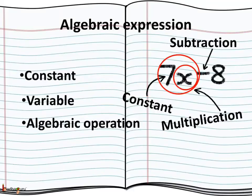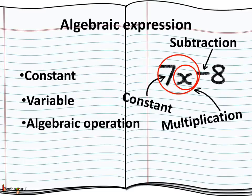We already know what an algebraic expression is. An algebraic expression is made of constants, variables, and arithmetic operations like addition, subtraction, multiplication, division, etc. For example, 7x minus 8 is an algebraic expression because 7 and 8 are constants with fixed values, x is a variable, and there are two operations: multiplication between 7 and x, and subtraction.